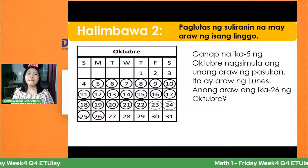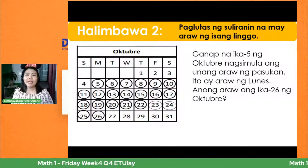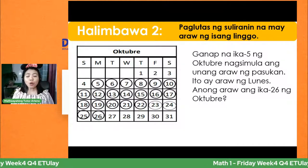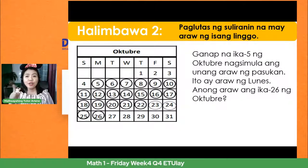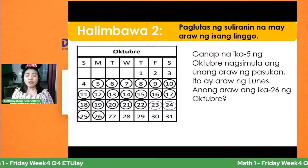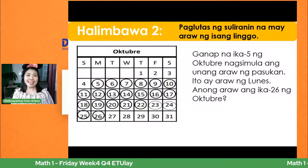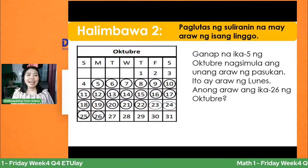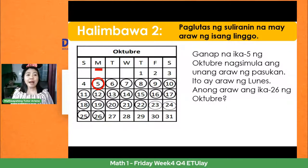Pangalawa natin ay paglutas ng suliranin na may araw ng isang linggo. Ito yung problem natin: ganap na ikalima ng Oktobre, nagsimula ang unang araw ng pasok — yung first day of school natin noon, October 5. Ito ay araw ng Lunes. Anong araw ang ika-26 ng Oktobre? Bilugan nga natin yung first day of school. Nakita natin yung M — yun ay Monday.